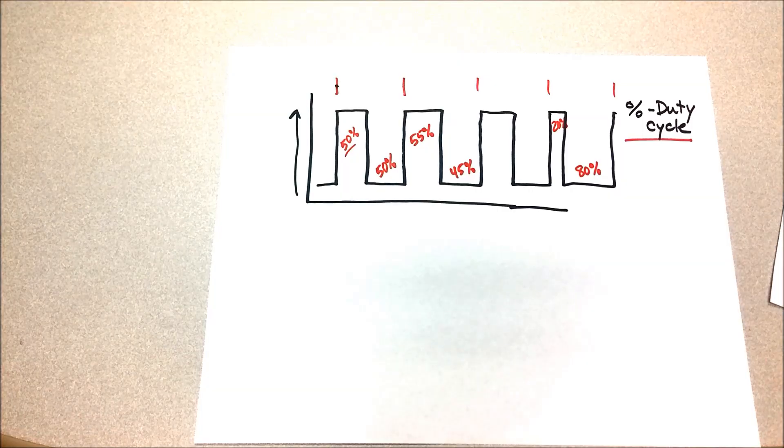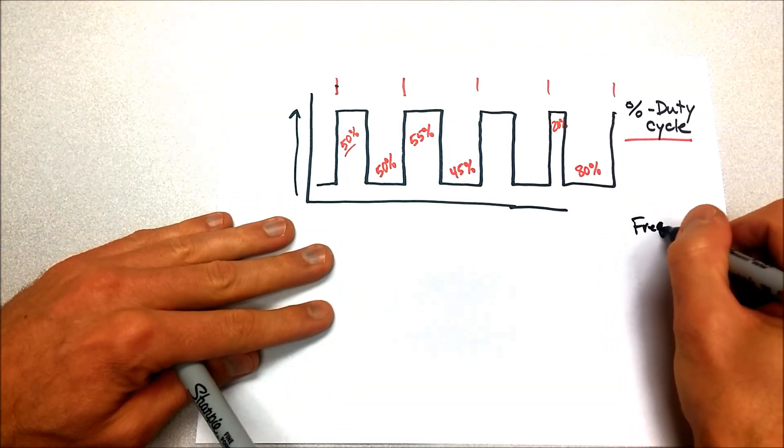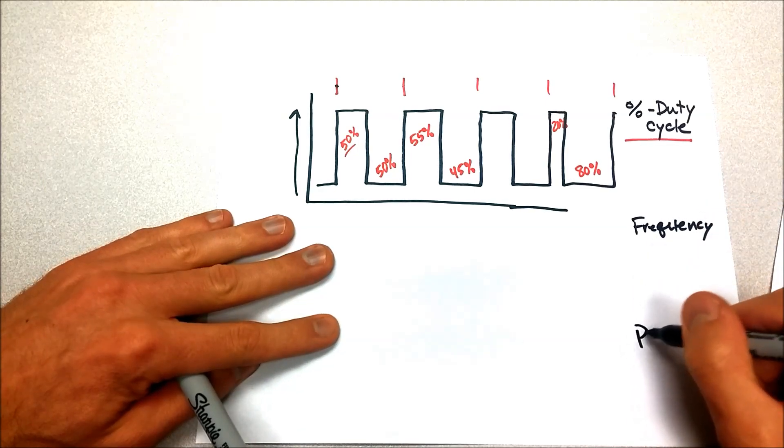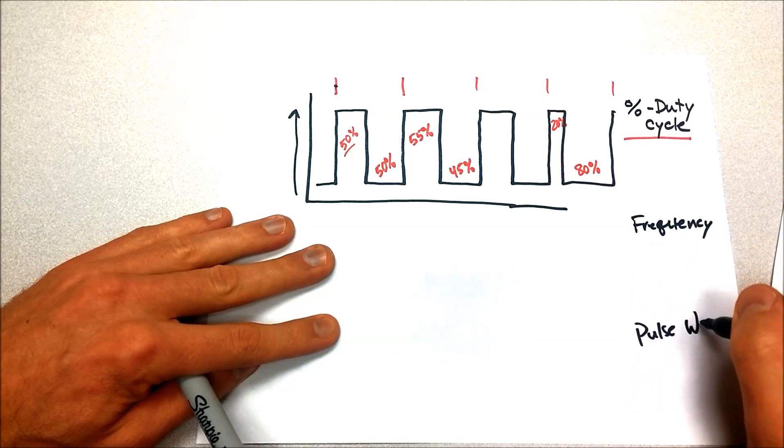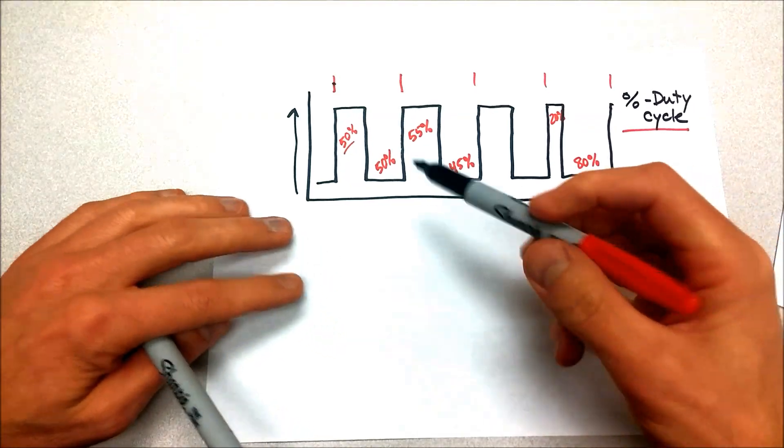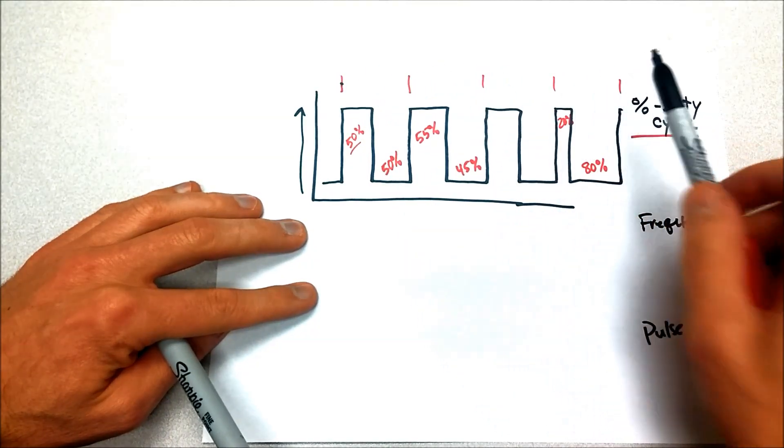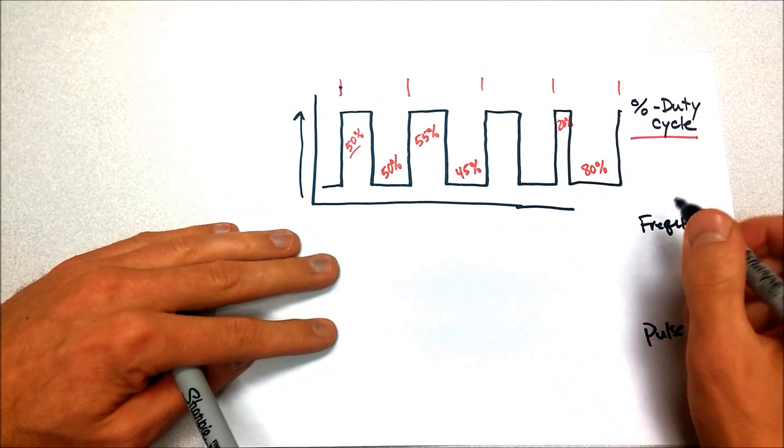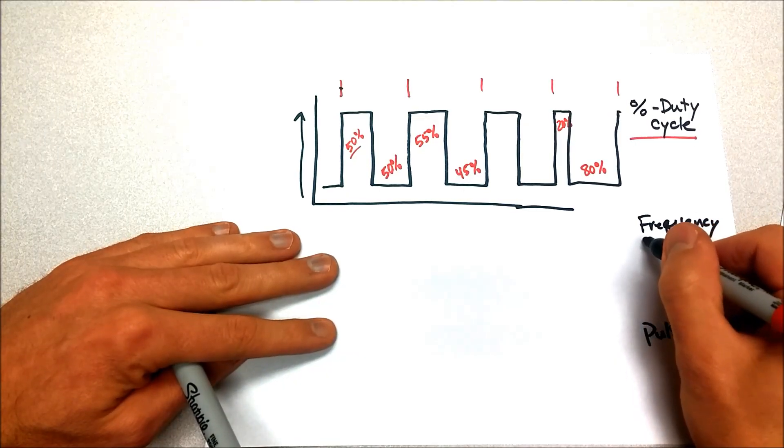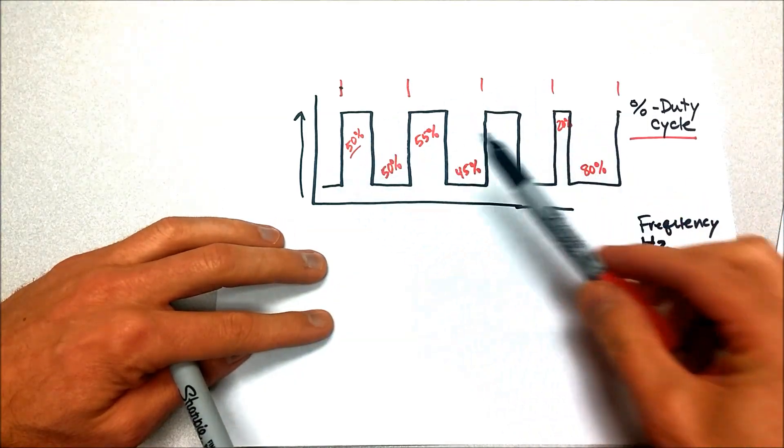Now, the other measurements are frequency. Frequency takes these cycles that we just marked off and says how many times did that happen per second? And that's measured in hertz, abbreviated as Hz. How many cycles per second?